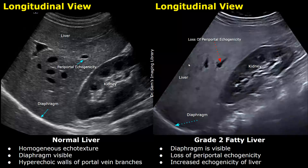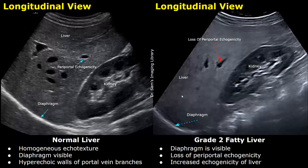In this image you can see a bright liver with loss of periportal echogenicity. The hyperechoic walls of portal vein branches are not seen; however, the diaphragm is seen clearly. Since the diaphragm is visible but periportal echogenicity is lost and the liver has increased echogenicity, this is a grade two fatty liver.